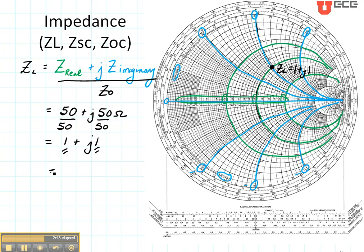Now let's see what would happen if this had been 50 minus j50 ohms. I would still have normalized by my 50 ohm characteristic impedance and I would have gotten 1 minus j1. The real circle would be the same. The imaginary part would be this line right here, which is negative 1. So this point right there is ZL equals 1 minus j1.